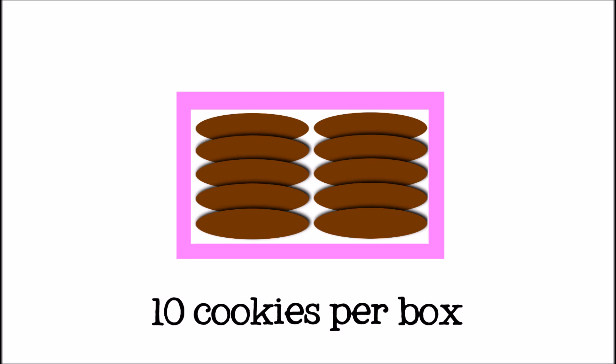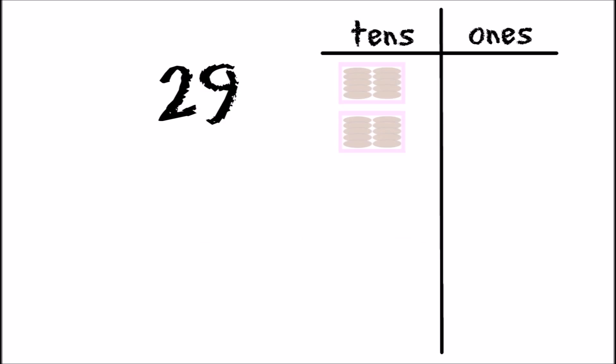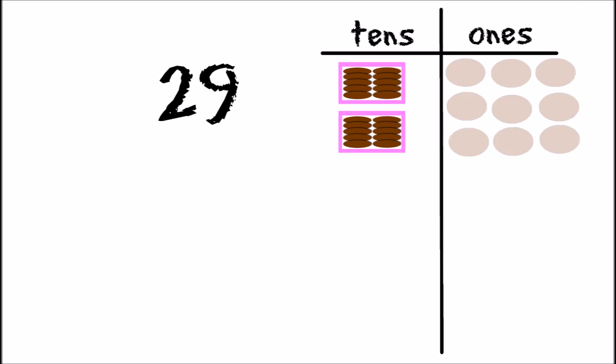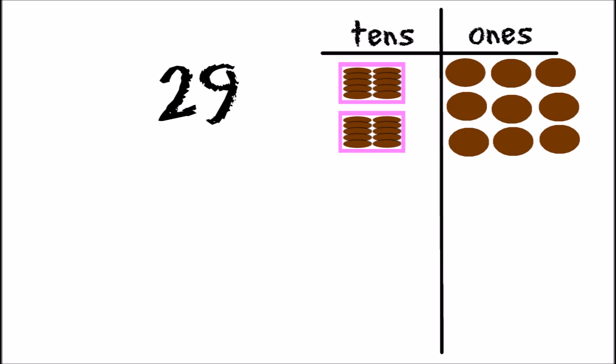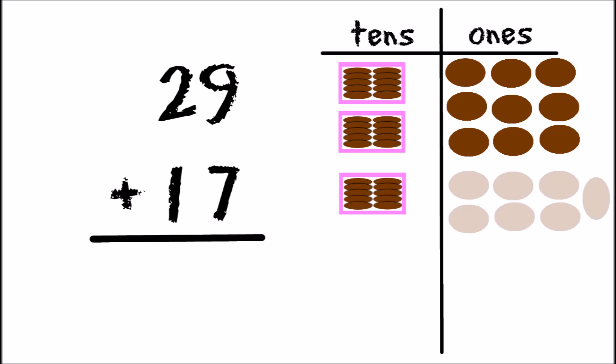Let's try another problem, but this time let's pretend that we have boxes of cookies. We have two boxes of ten cookies and nine individual cookies, and we want to add to that seventeen more cookies — that's one box of ten cookies and seven individual cookies.